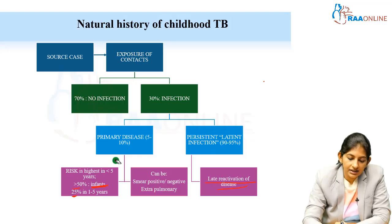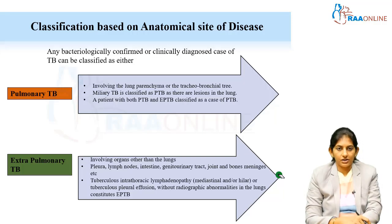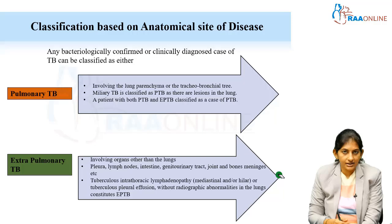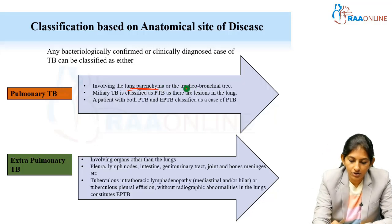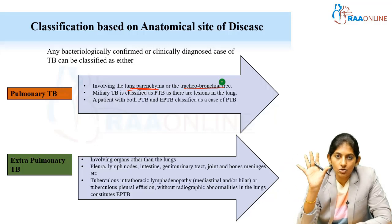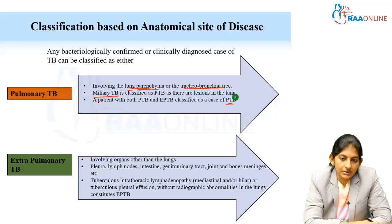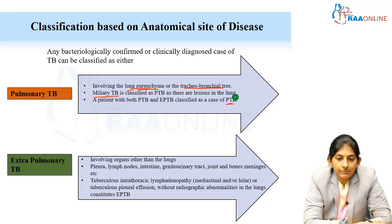Tuberculosis disease can be pulmonary tuberculosis or extra-pulmonary tuberculosis. Pulmonary TB involves the lung parenchyma or the tracheobronchial tree. Miliary tuberculosis, where there are disseminated nodules on both lungs, is also classified under pulmonary TB. If a patient has both pulmonary and extra-pulmonary TB, it is primarily referred to as PTB. Extra-pulmonary TB means anything other than the lung — lymph node TB, intestine, GIT, GUT, joints, bones, and CNS TB.